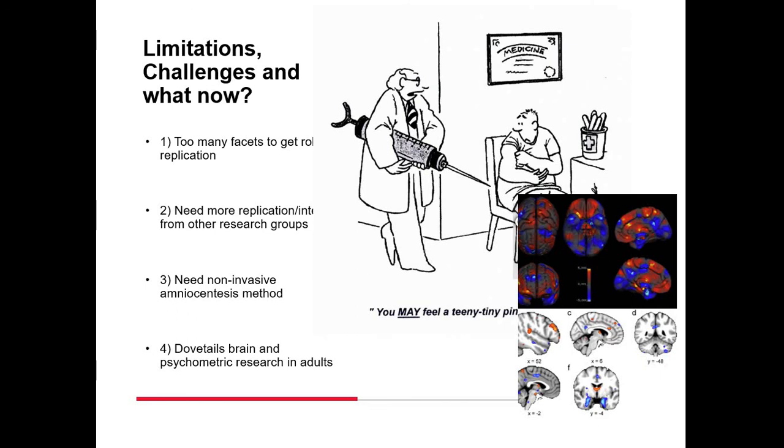One of the limitations with this kind of study is that because an extreme male brain theory would concern so many facets, what is considered male is a very difficult philosophical, social and scientific question. It's really a grab bag of dimensions. It's hard to get replication on each of those facets.